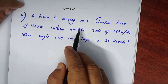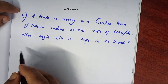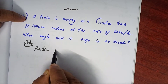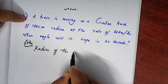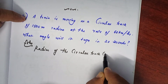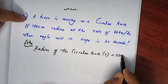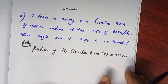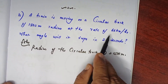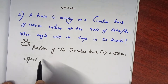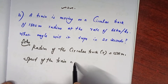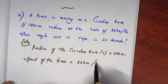The train is moving on a circular track of 1500 meter radius. Solution: radius of the circular track is equal to 1500 meters. Speed of the train is equal to 66 km per hour.